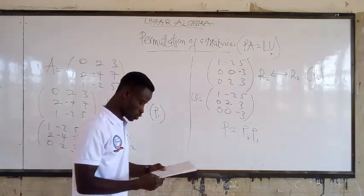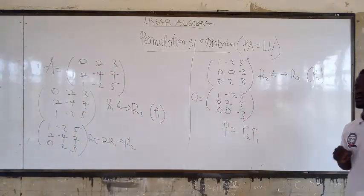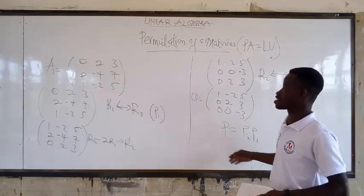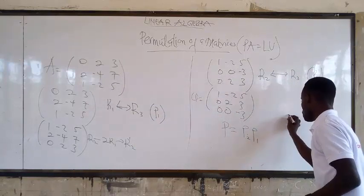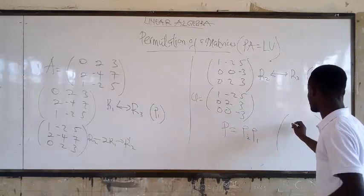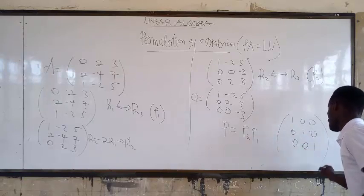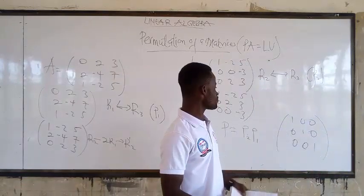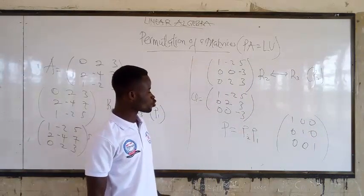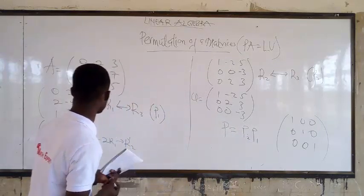From here we go and form our permutation matrix P. P will be equal to P2 multiplied by P1. To do that, we generate a 3×3 identity matrix for the original matrix, then we apply P2 and P1 to it.